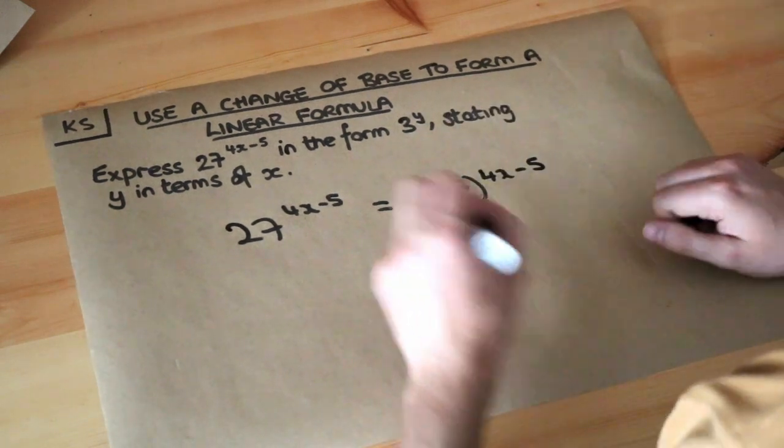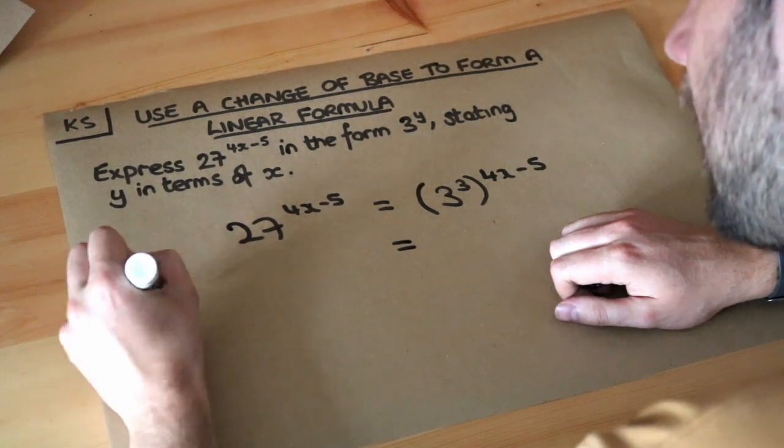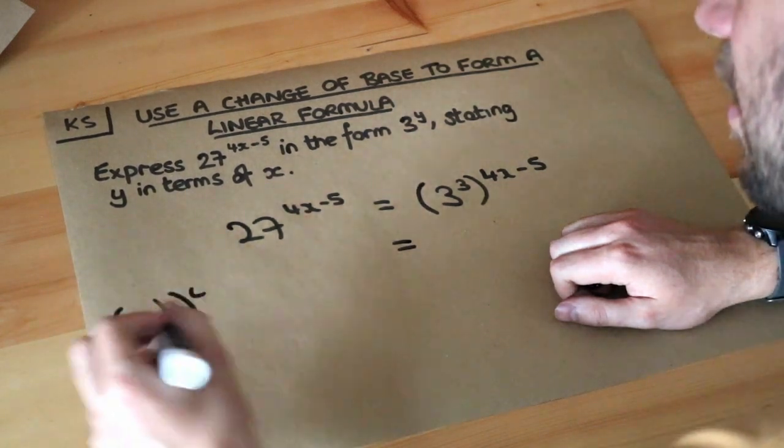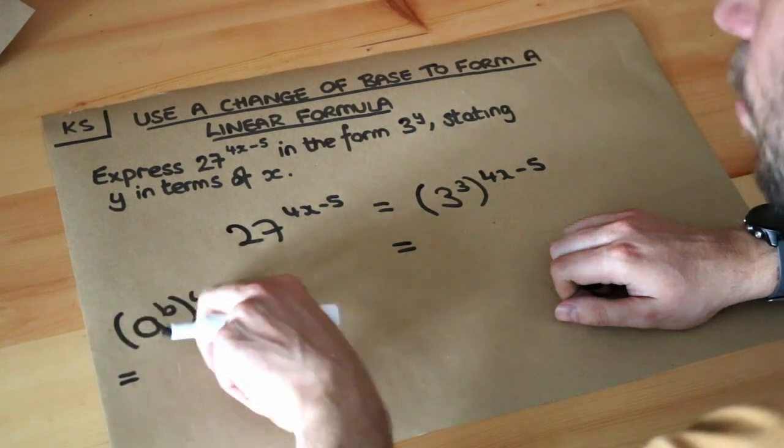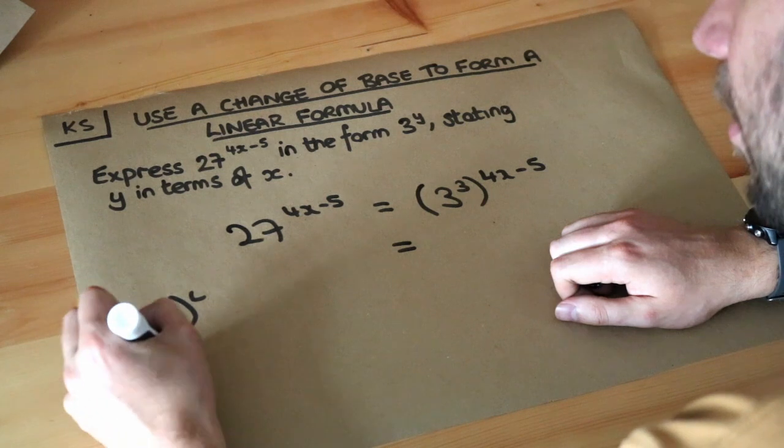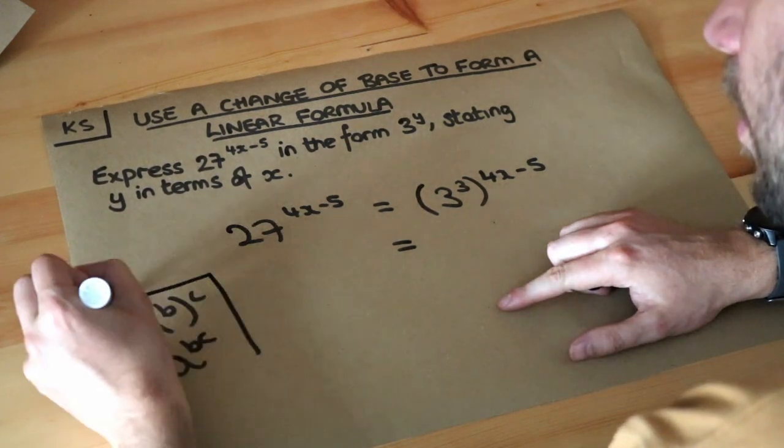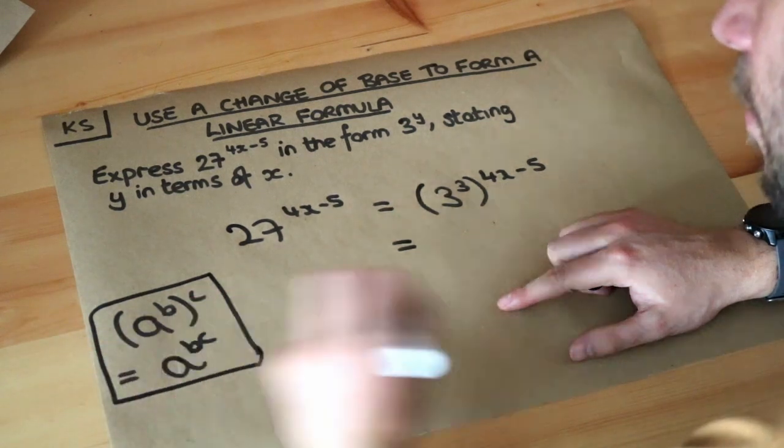And then we can just use laws of indices. Now do you remember the law of indices? That if you have a to the power of b to the power of c, when you have a power expression to a power like this, you can times the b and the c together, the indices together. So that would be a to the power of b times c. You should have already learned that before you view this video.